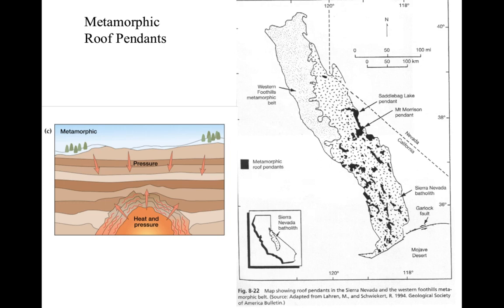For the roof pendants — remember, roof pendants form as magma is rising. Heat and pressure burn the adjacent surrounding rock, making this roof pendant. Eventually erosion exposes it and we see these older metamorphic rocks. The strata represents that trailing continental margin sediment. There are several roof pendants, including one down in the southern Sierra Nevada where Cretaceous plutons have intruded.